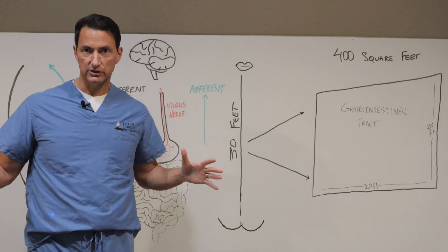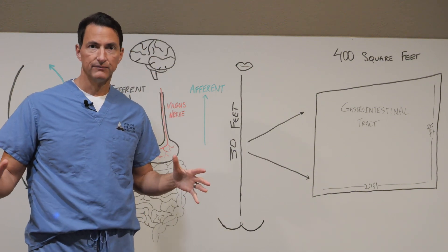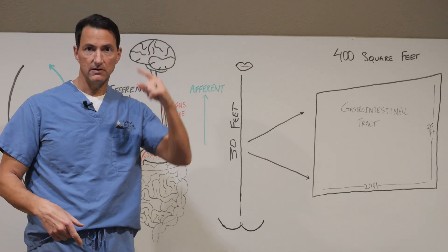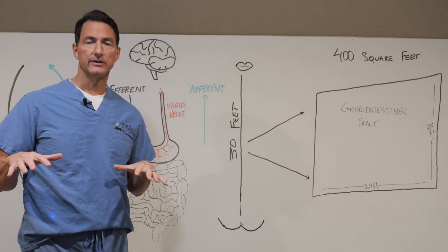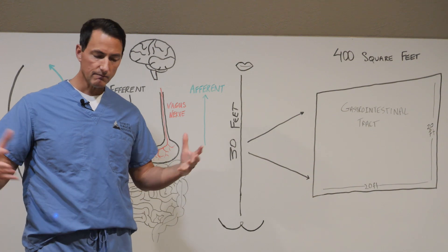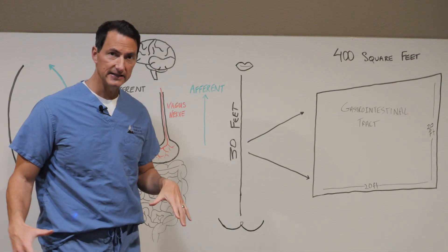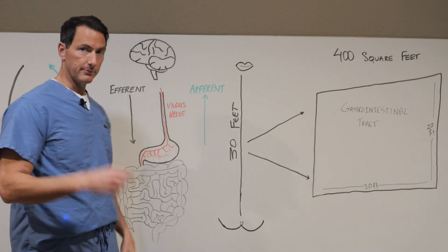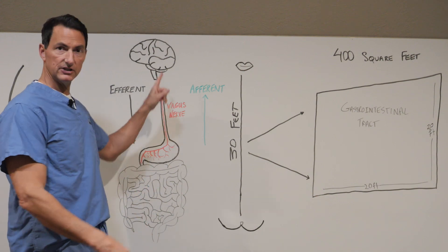And last time we mentioned the vagus nerve as the primary communication avenue between the brain and the gut. Now the gut is a huge surface, 400 square feet. Top to bottom is 30 feet long. It is a massive sensory organ, our biggest sensory organ in the body.